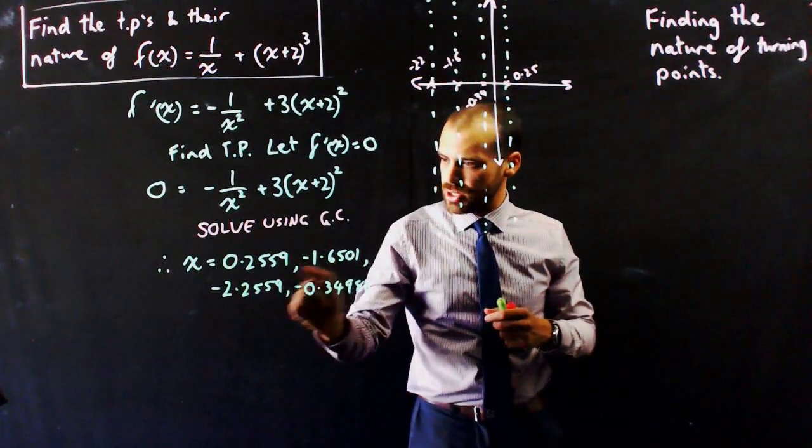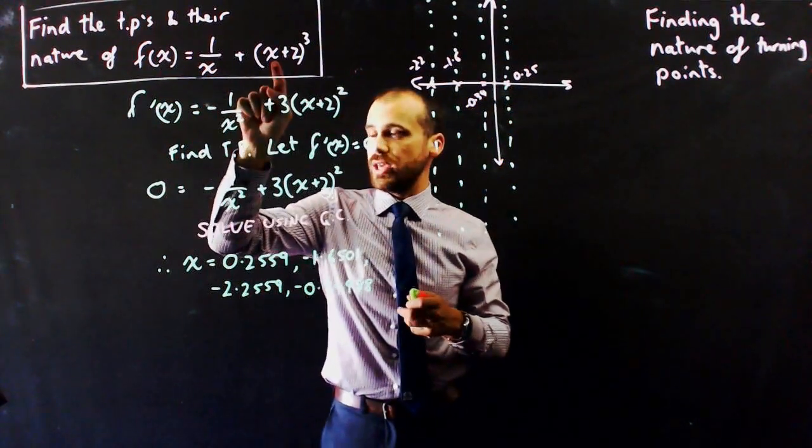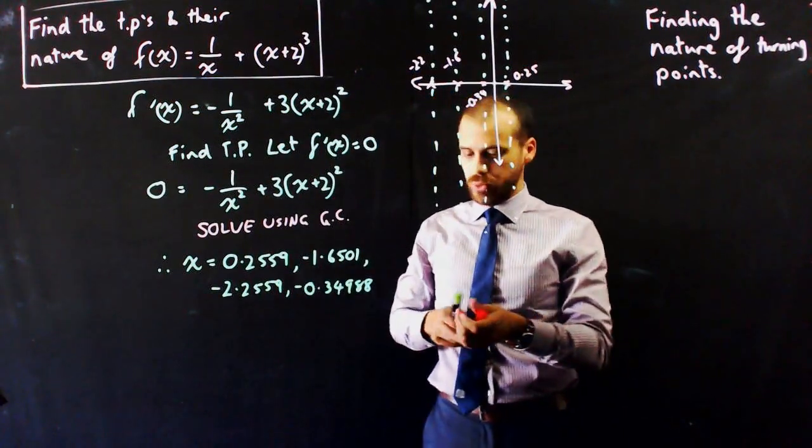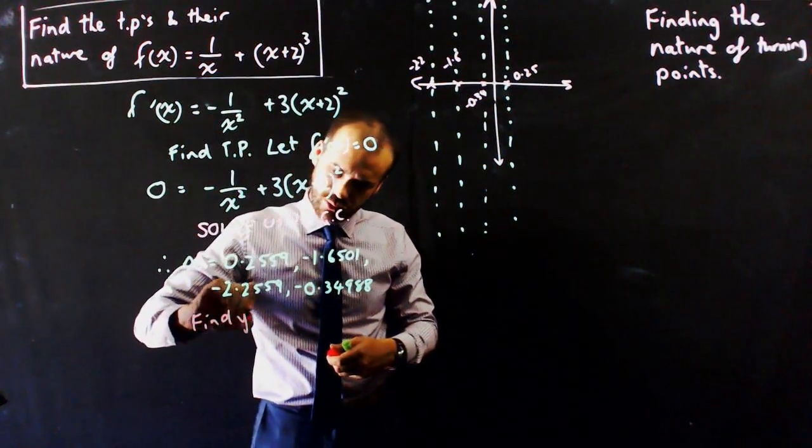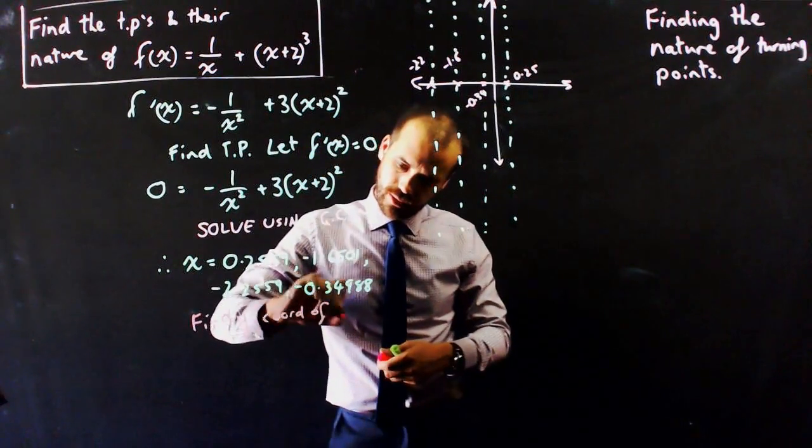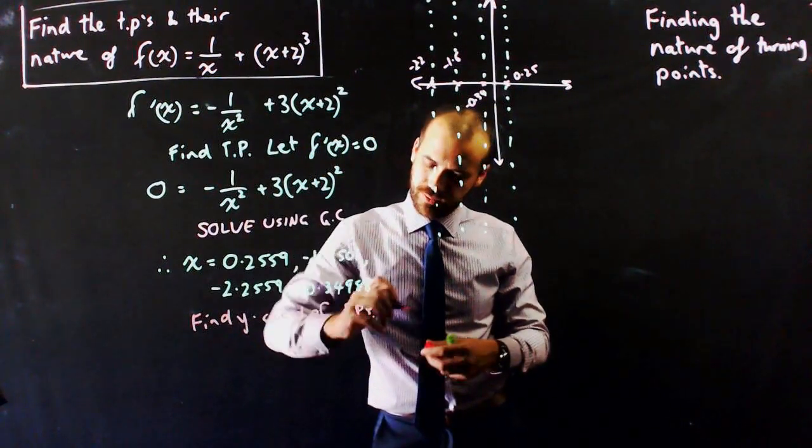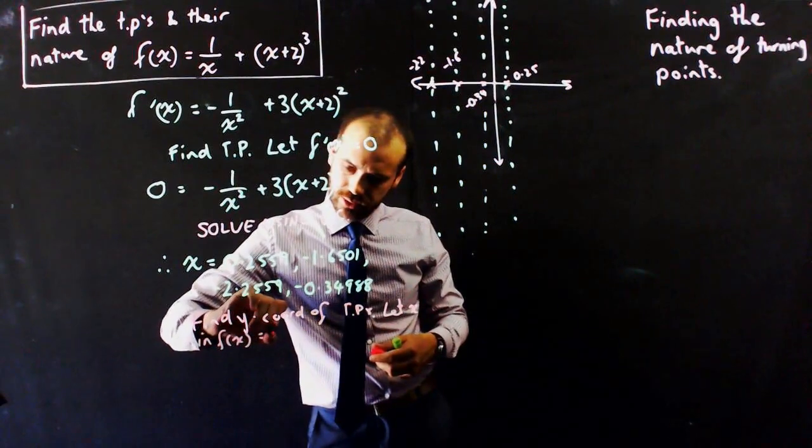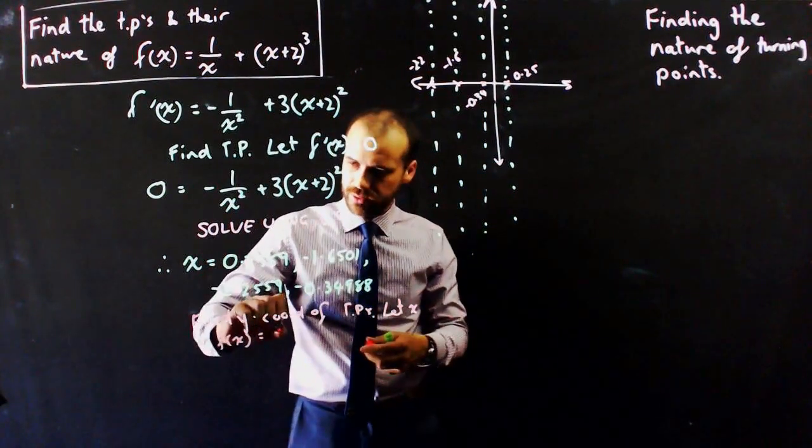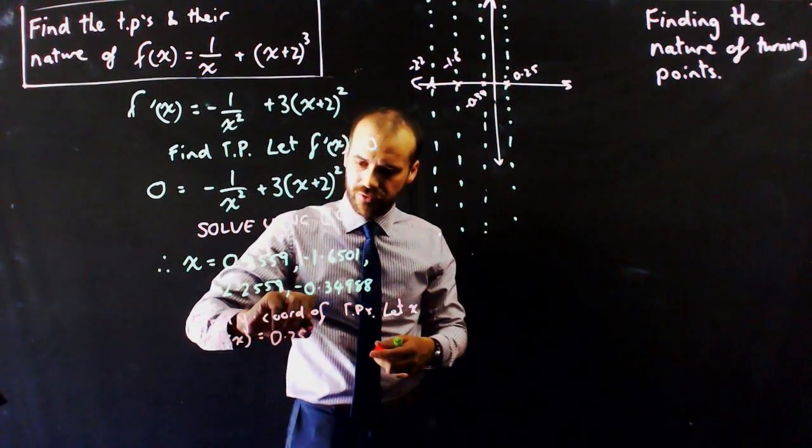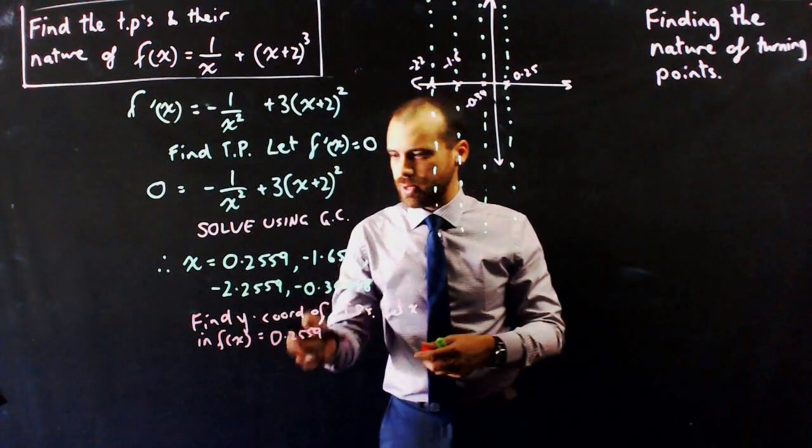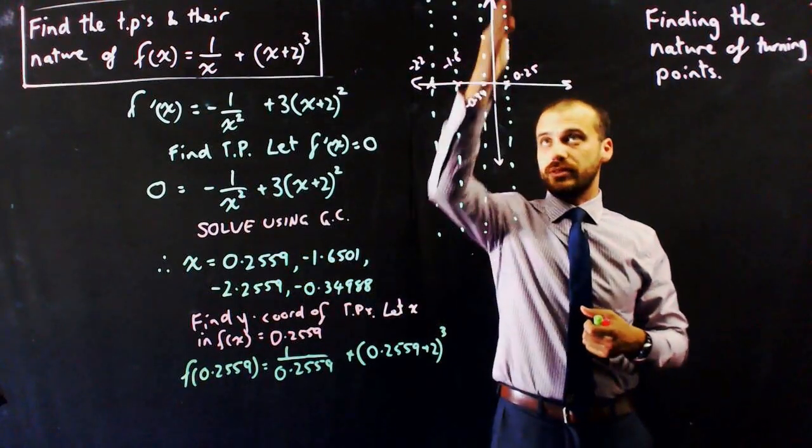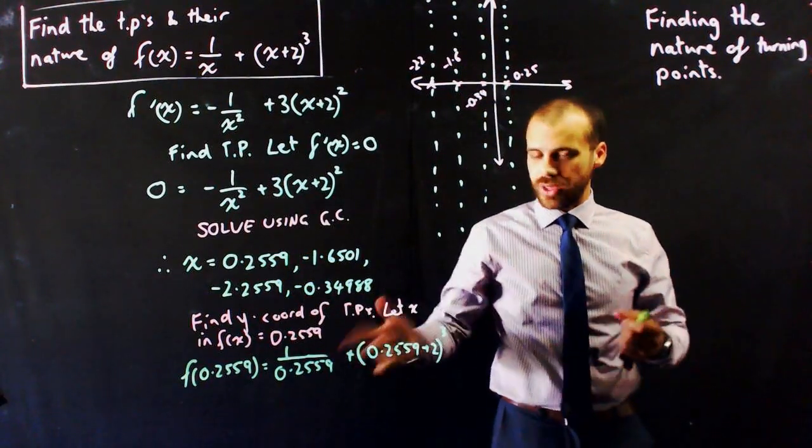So now I need to sub each of those points into my original equation for x to find out what the y-coordinates of each of those turning points would be. So find y-coordinate of turning points. Let's let x in f(x) equal each point. So in this particular case, it's going to be 0.2559. And then I'm going to do it for that one, and then I'm going to do it for that one, and then I'm going to do it for that one. So I've put in my first value, 0.2559, which is this line here, and I'm going to find out what that turning point is.